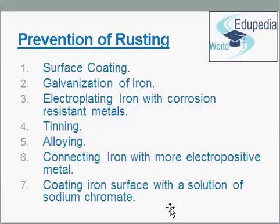Second, galvanization of iron. Iron is protected from rusting by coating it with a thin layer of zinc, which is more electropositive than iron. The process of coating iron with a thin layer of zinc is called galvanization. Third, electroplating iron with corrosion-resistant metals such as nickel and chromium. Fourth, tinning: iron is protected from rusting by coating it with a thin layer of tin, which being less electropositive than iron is not attacked by air or water. Fifth, alloying: iron is protected from rusting by alloying it with nickel and chromium.